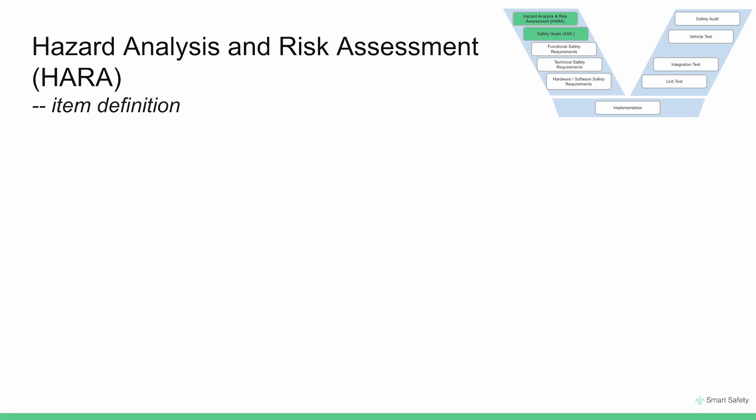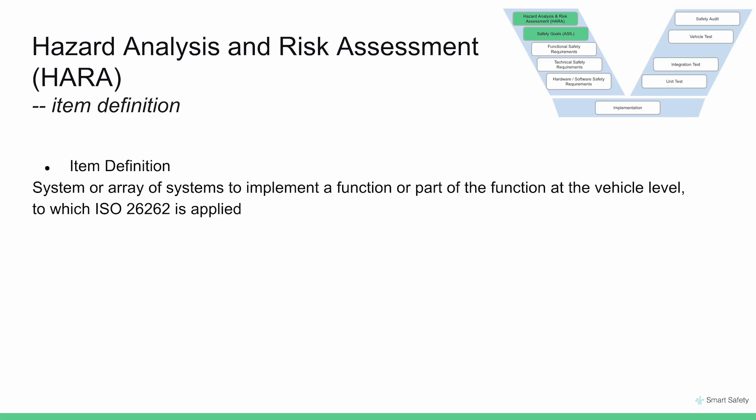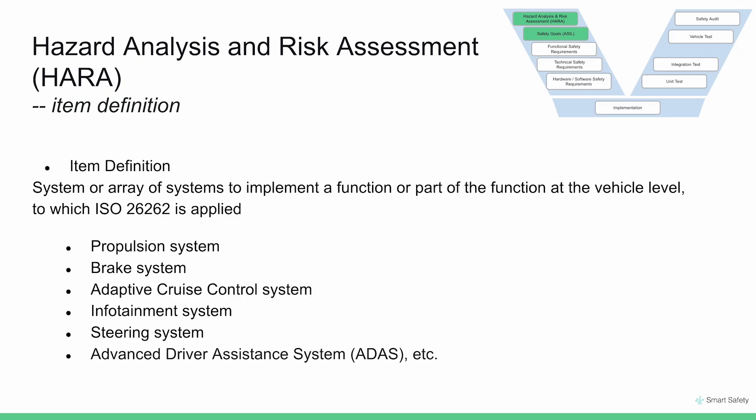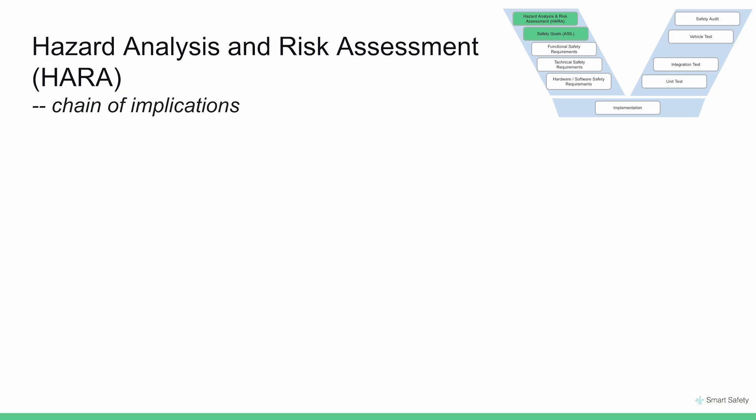To explain HARA, we'll go through the chain of events step by step. First, let's talk about what an item definition is, which is an input to HARA. An item is a system or a combination of systems that implements a function or part of a function at the vehicle level to which the standard is applied. For example, a motion control system or a brake system is an item which implements the torque command function or the braking function. Other examples include adaptive cruise control, infotainment system, steering system, and advanced driver assist system.